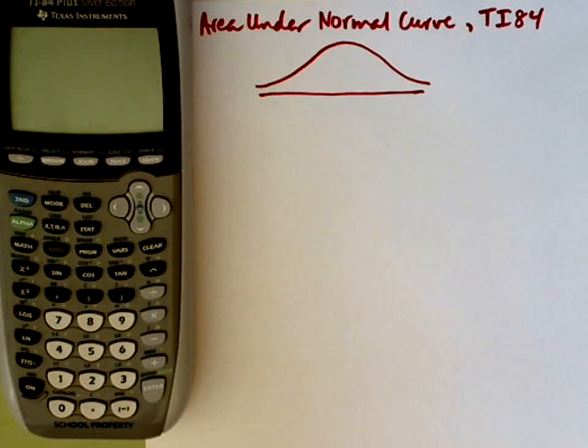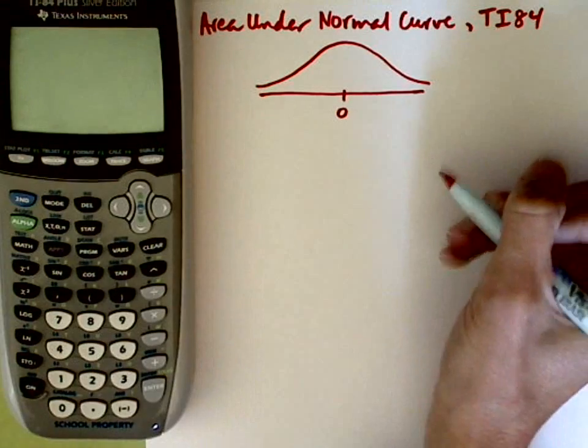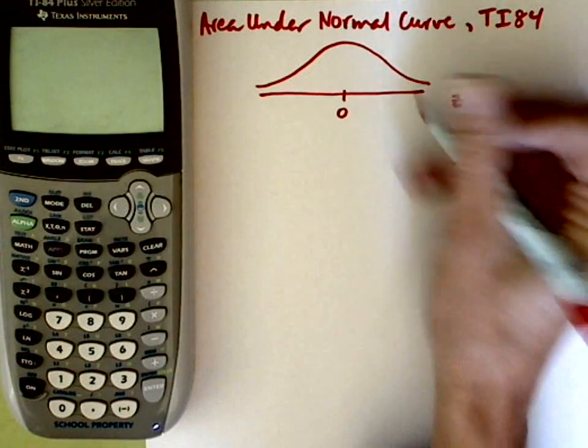We're going to compute areas under the normal curve using a TI-84. The keystrokes are the same if you're using a TI-83. Here I've drawn a normal curve. We'll be using z-scores. A z-score of 0 represents the mean. I'll mark my scale here as z-scores.